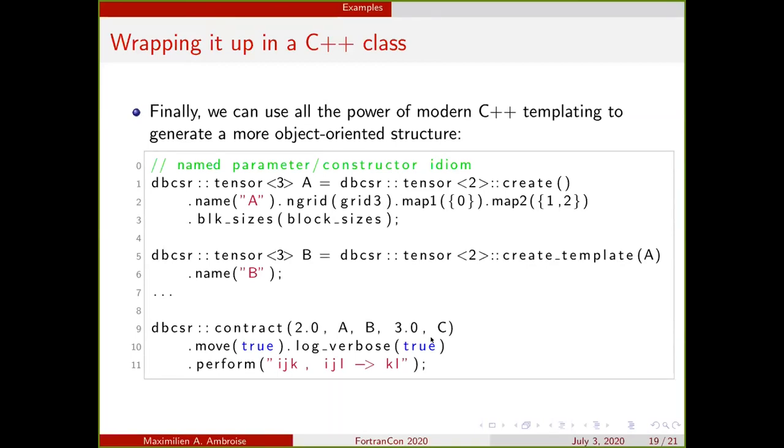Because this is a Fortran conference and not a C++ conference, I won't go too much into the detail about how I did it with templating. But if you are ready to walk to the nine circles of templating hell, you can get something very nice where you can declare the tensors with templates. Then we can use named parameters, named parameter and named constructor idioms, which are very nice and, in my opinion, very clear about which variables go in and which don't. It has a lot of curly braces, but if you're a C++ developer, you're probably not afraid of a few more curly braces. You can have different constructors like create and create_template, and then pass other variables by calling class members. As I mentioned before, you can call a contract class, which you can also pass some optional arguments like move or log_verbose, and then you call the perform function to finally do the contraction at the end.